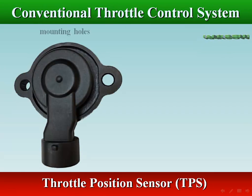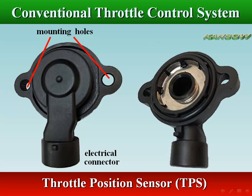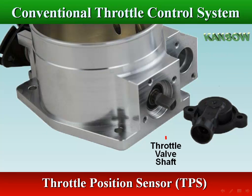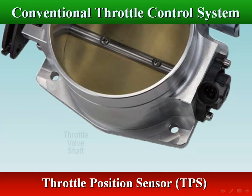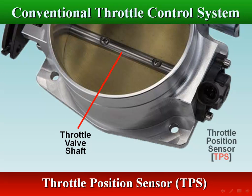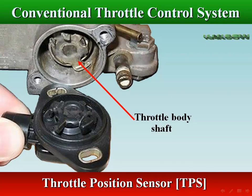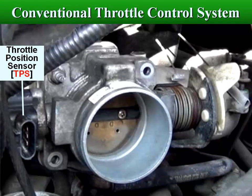A throttle position sensor (TPS) is a sensor used to monitor the throttle position of a vehicle. The TPS is usually located on the butterfly shaft so that it can directly monitor the position of the throttle. The contact throttle position sensor, or potentiometer, provides a variable resistance according to different throttle valve positions.